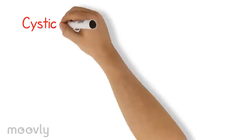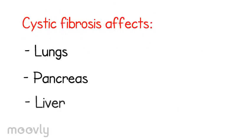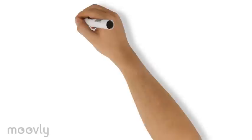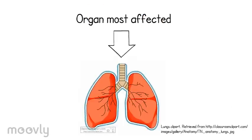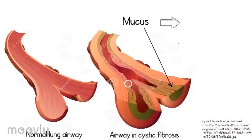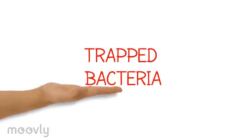This inherited disease mainly affects the lungs, pancreas, liver, intestine, and sinuses. The most prominent organ affected are the lungs. Excess mucus causes infections and eventual permanent lung damage to trap bacteria.